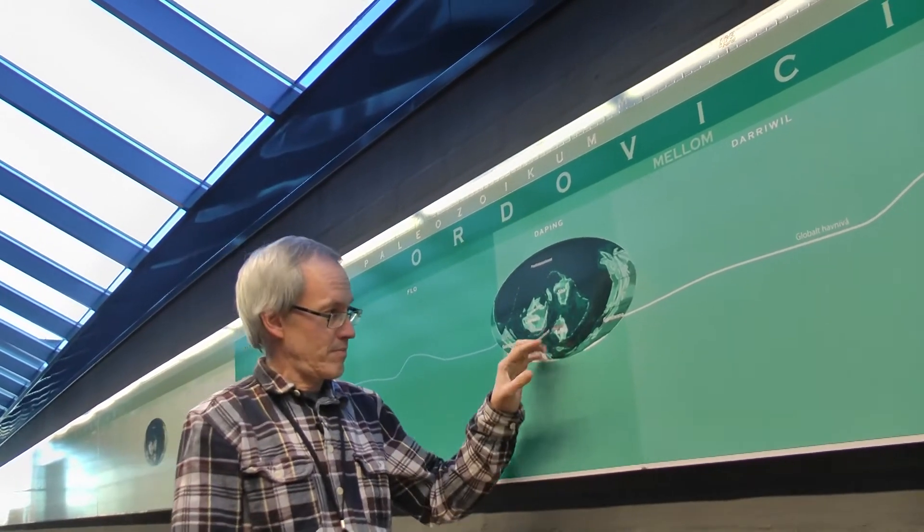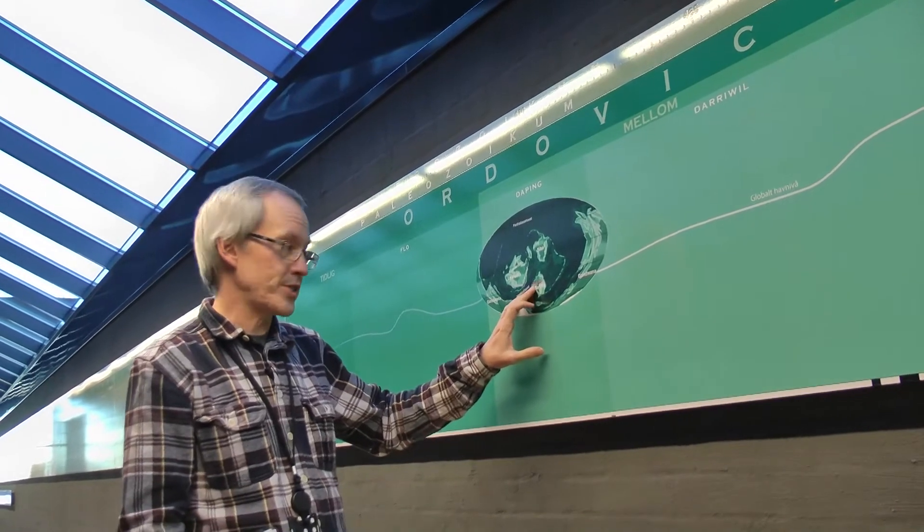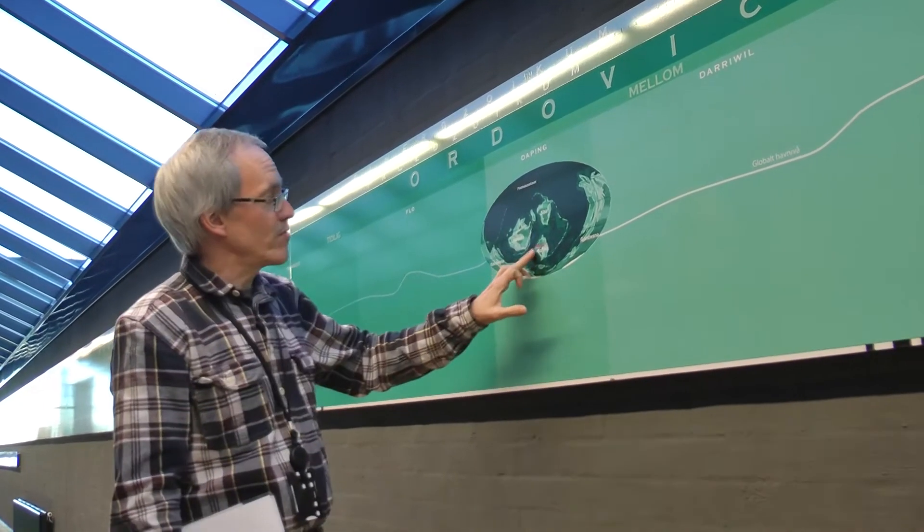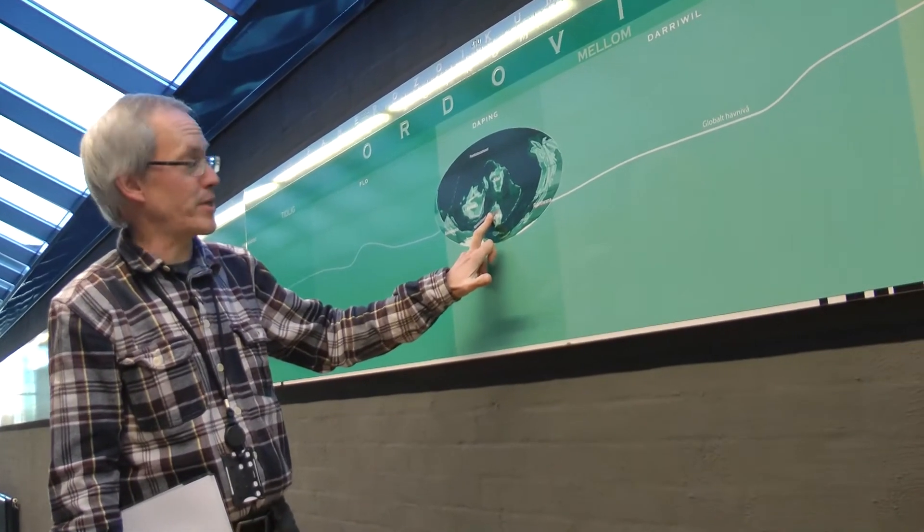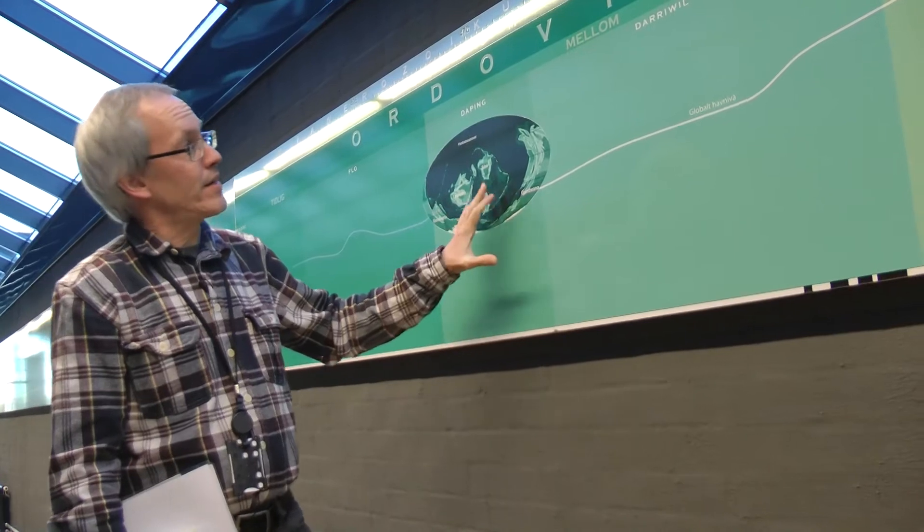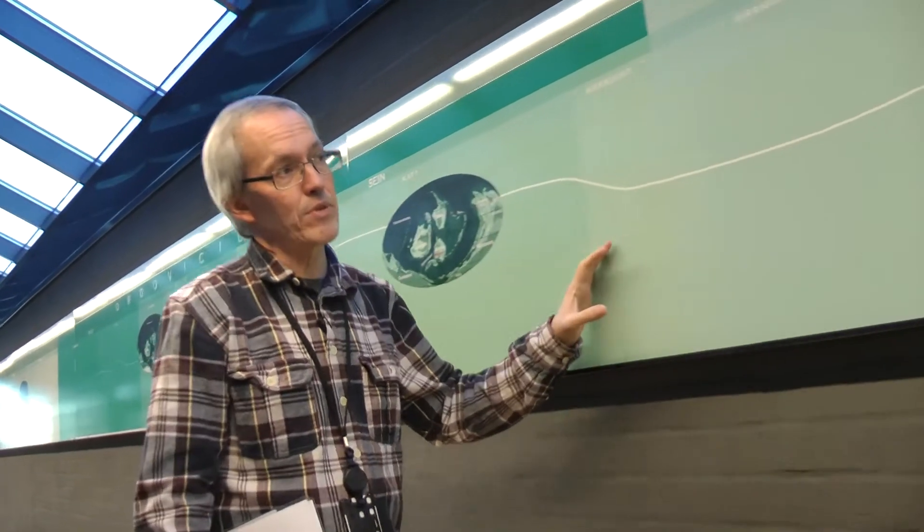We notice here on the paleogeography, Balticum—Norway, Sweden, and Finland—was very far south. In the area we were almost at the south pole. We've been moving north ever since, about 2 to 4 centimeters a year.